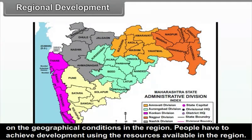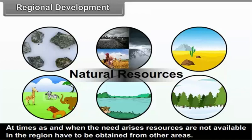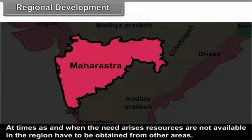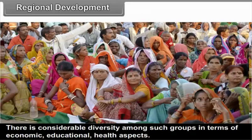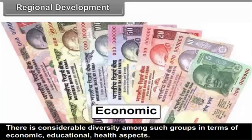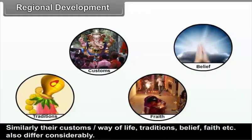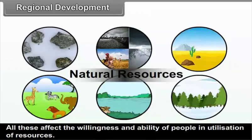People have to achieve development using the resources available in the region. At times, resources not available in the region have to be obtained from other areas. In any society, there exists a number of groups of individuals with considerable diversity in terms of economic, educational, and health aspects. Similarly, their customs, way of life, traditions, beliefs, faith, etc. also differ considerably. All these affect the willingness and ability of people in utilization of resources.